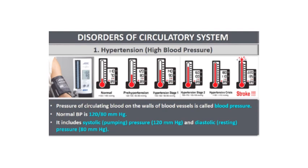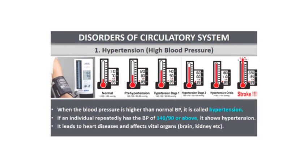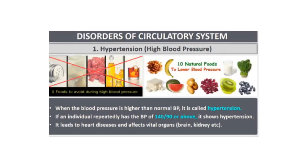Let us look at some disorders of the circulatory system. The first is high blood pressure or hypertension, which occurs when the pressure of blood on the walls of blood vessels is high. Normal BP is about 120/80 mmHg, including systolic and diastolic pressure. If an individual repeatedly shows a BP of 140/90, they are said to have hypertension. It can affect vital organs like the brain and kidneys. A person with higher than normal BP should change their diet and eat only healthy food to manage the disease.